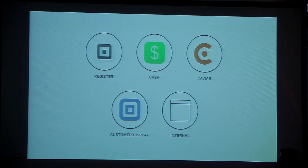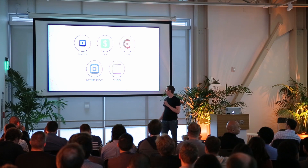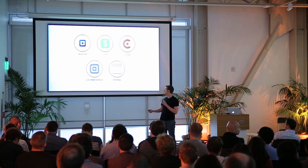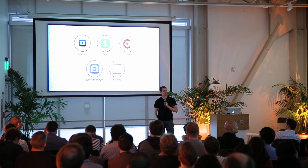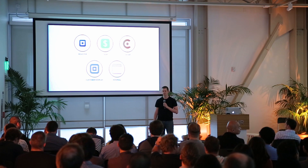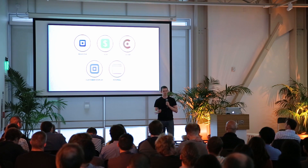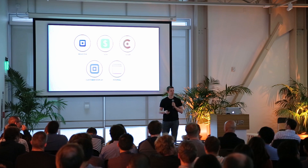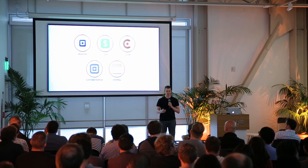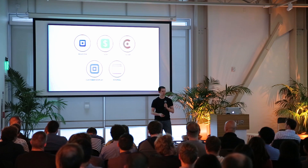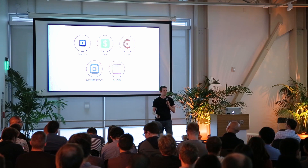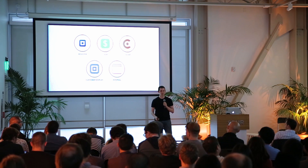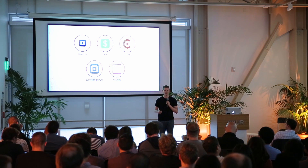To give you some context, these are all our apps. You're probably familiar with some of them. Register is our primary point of sale. Cash is for person-to-person money transfers. Caviar is for ordering food for delivery. The customer display is a little sidekick for the Register app. And then we have a bunch of internal apps as well. All of these apps share some code between them. We generate static libraries, and they're included in each of the apps' dependencies. You've got categories and helper methods and all kinds of great stuff that you bring from project to project. We have reusable classes that act as currency and money and things like that.